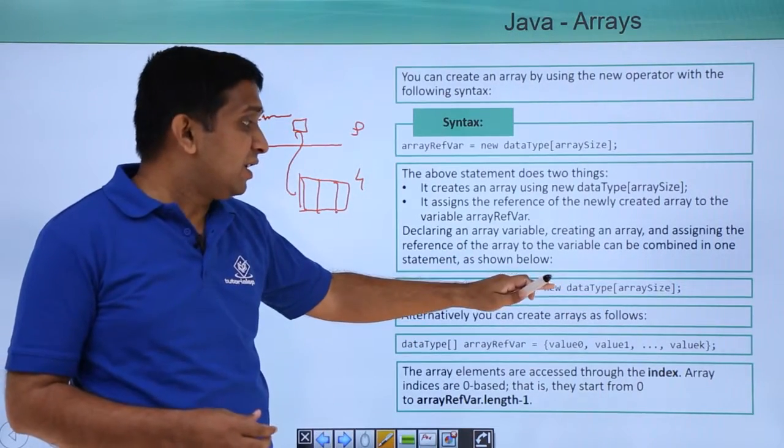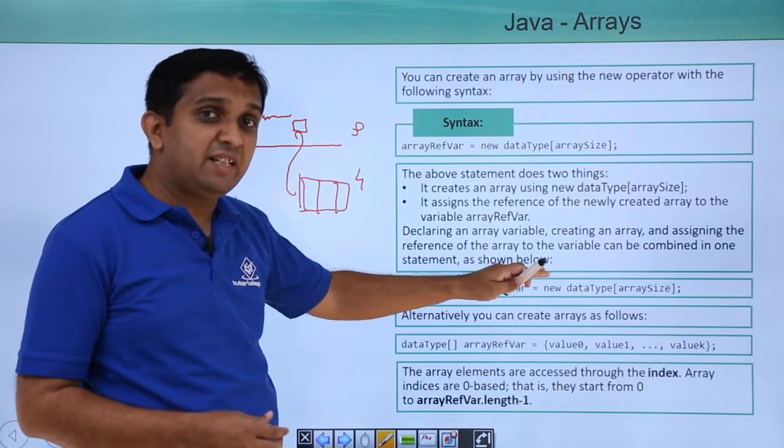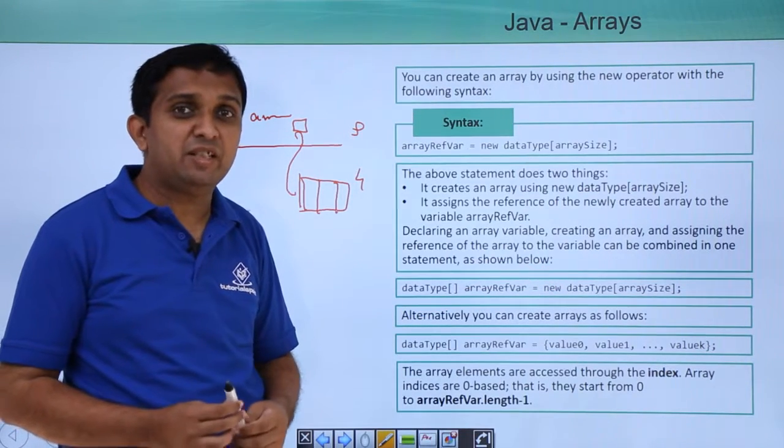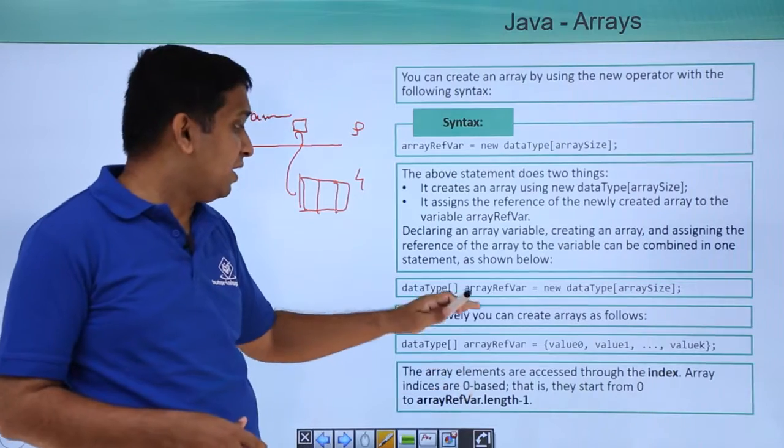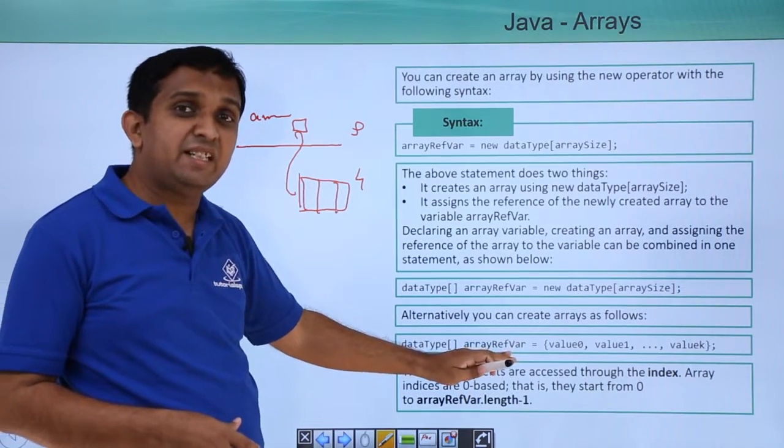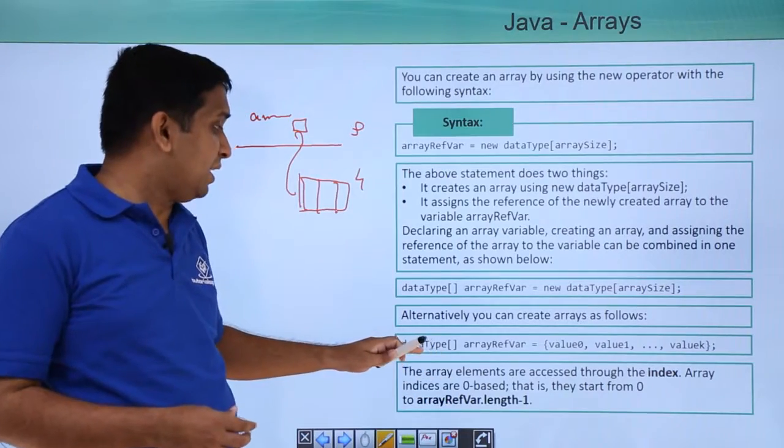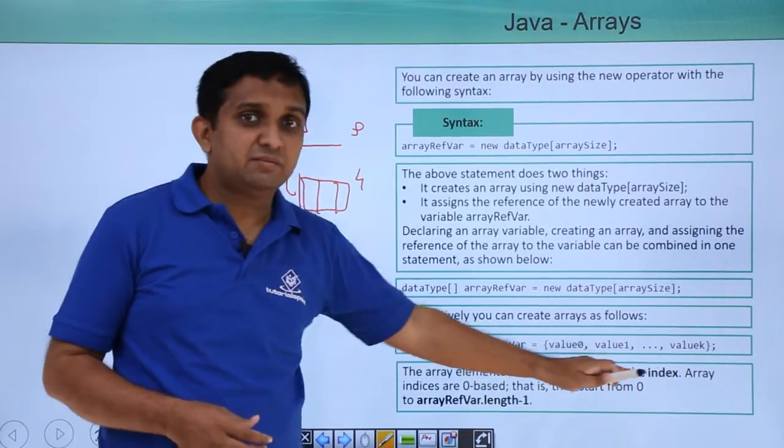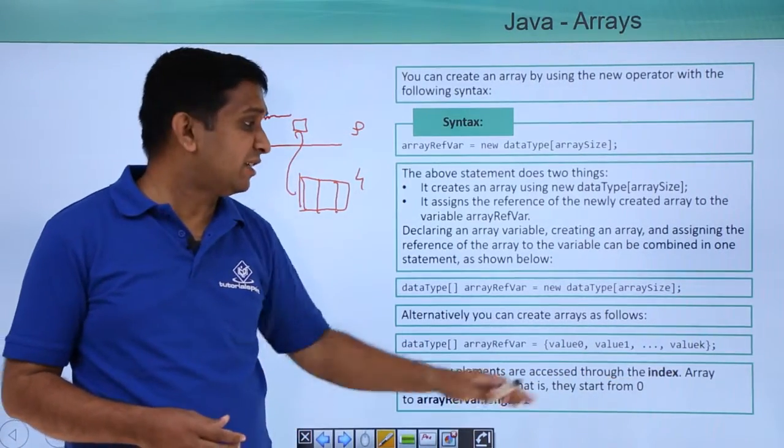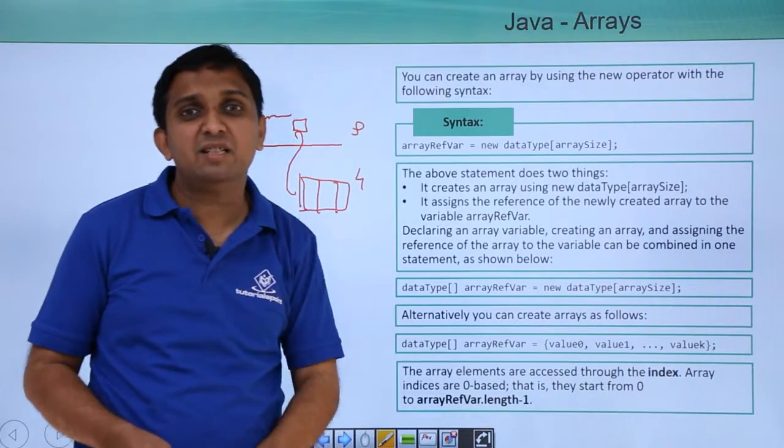You can write this in a single statement. Now, if you want to create an initialized array, that means without using the new keyword, then it can be written something like this. You will directly write the comma-separated values in the curly brackets.